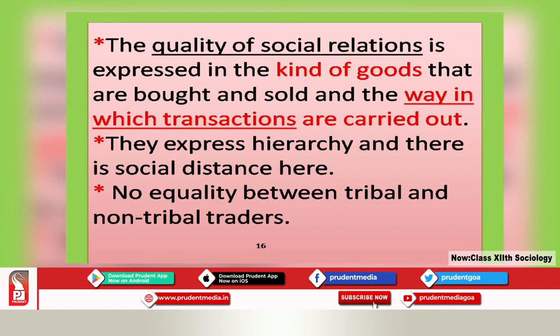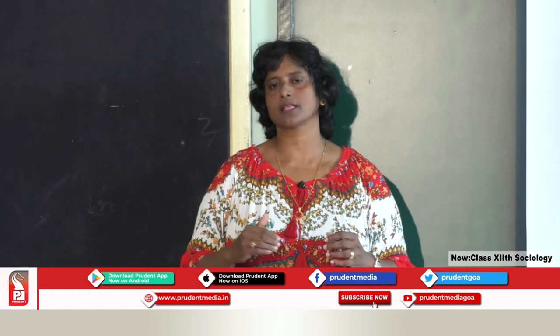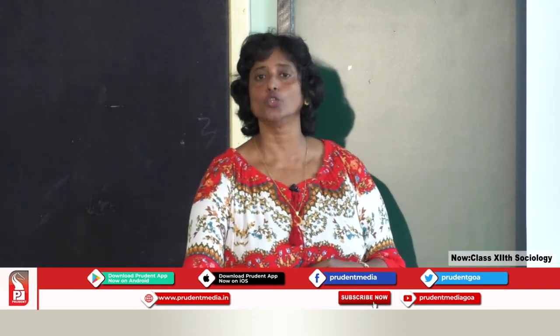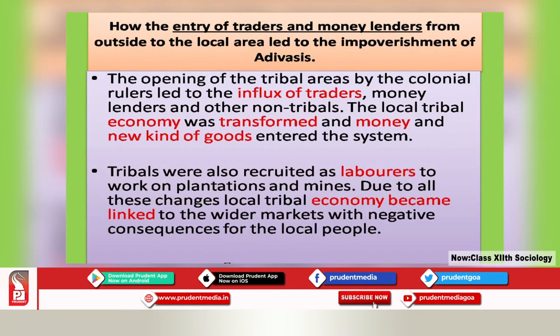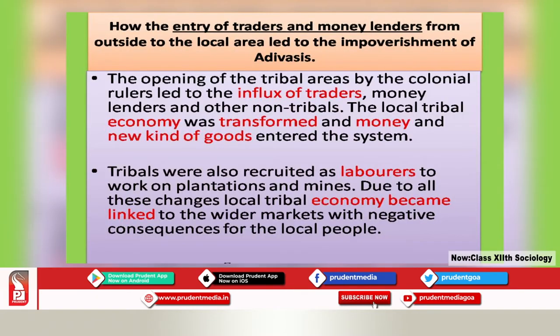The quality of social relations expressed was seen in the kind of goods bought and sold and the way transactions were carried out. They expressed hierarchy and social distance along caste lines — between the tribals and non-tribals. There was no equality among traders; differences between tribal and non-tribal traders were always visible.